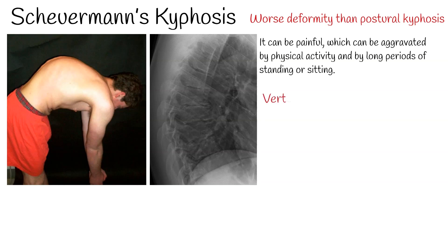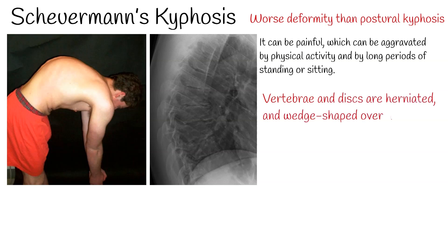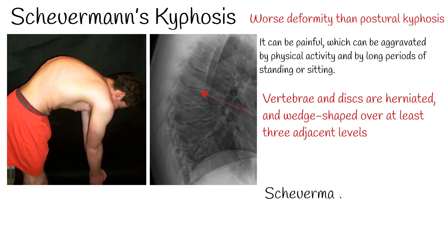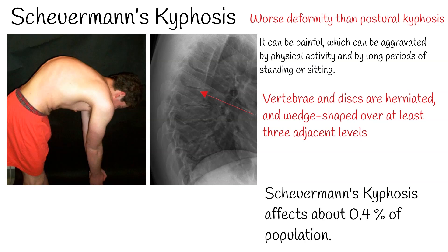A patient suffering from Scheuermann's kyphosis cannot consciously correct their posture. Whereas in postural kyphosis the vertebrae and discs appear normal, in Scheuermann's kyphosis they are irregular, often herniated, and wedge-shaped over at least three adjacent levels. Scheuermann's kyphosis commonly requires surgical correction and can be genetic. It affects about 0.4% of the population.